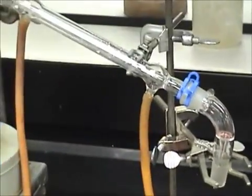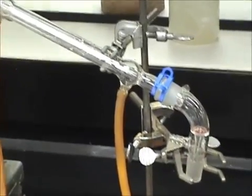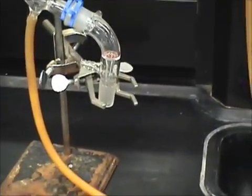Now, we can add a receiving flask to the end of the vacuum adapter. Secure this joint with a clip as well.